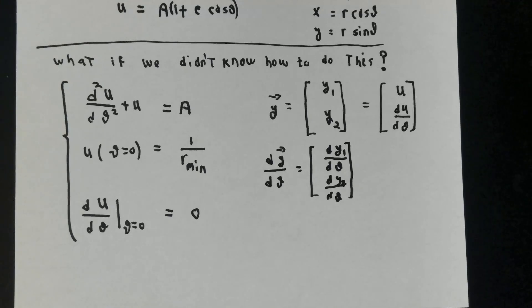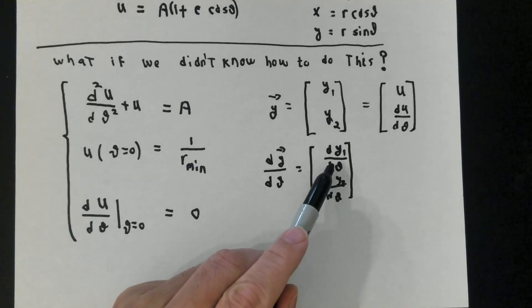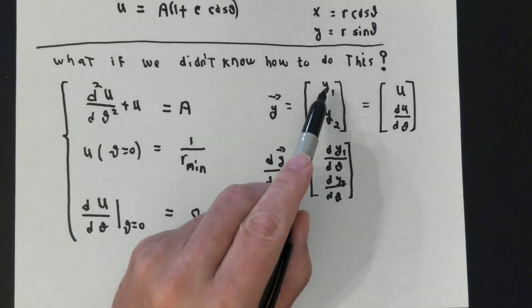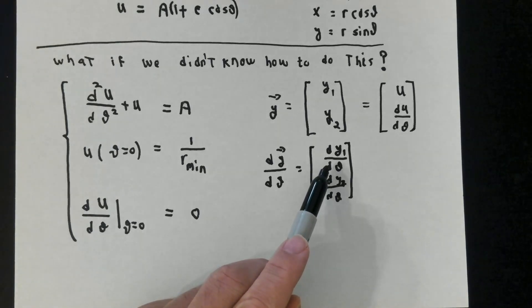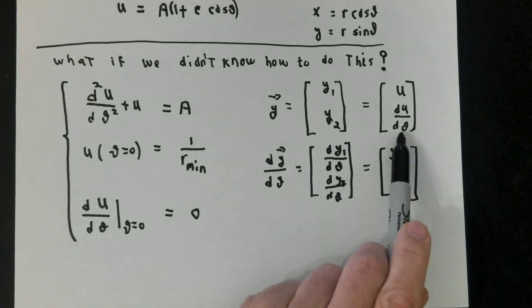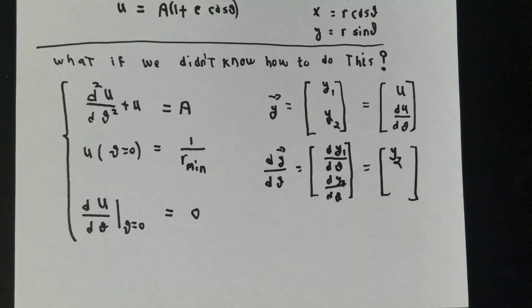And y number 2 is the derivative of u with respect to theta. Just as in ordinary third semester calculus, we differentiate such a thing one component at a time. The derivative of y1 with respect to theta is the derivative of u with respect to theta. y1 is u, so this first component is just du d theta, which is another name for y2. So the first component of the derivative of y with respect to theta is y2.